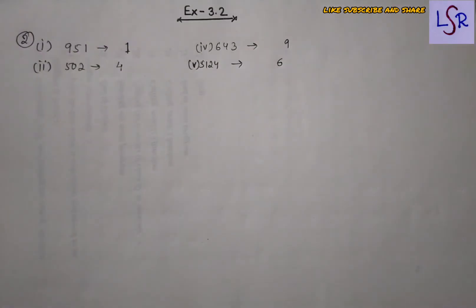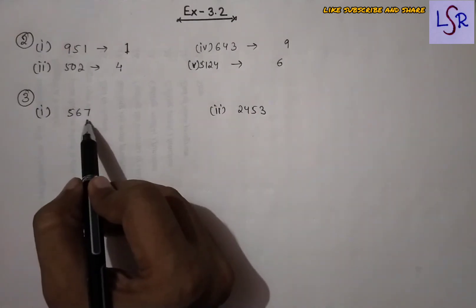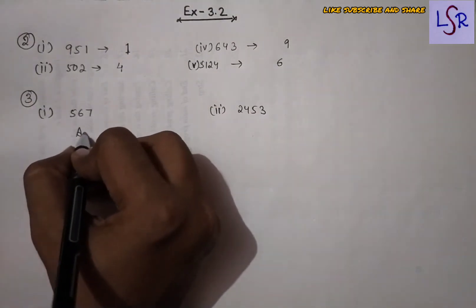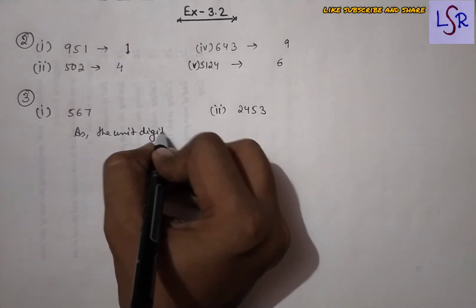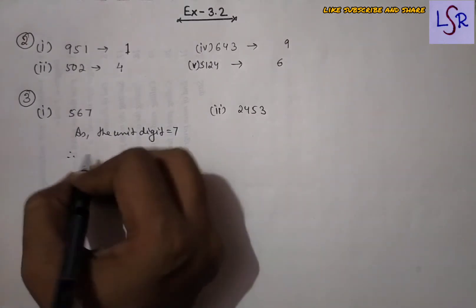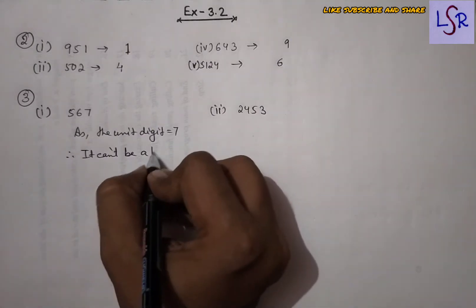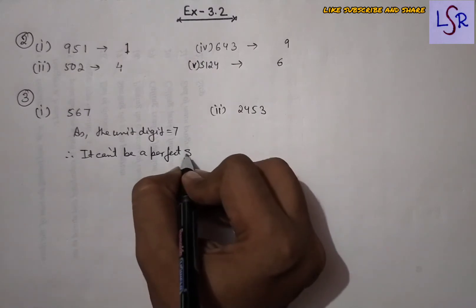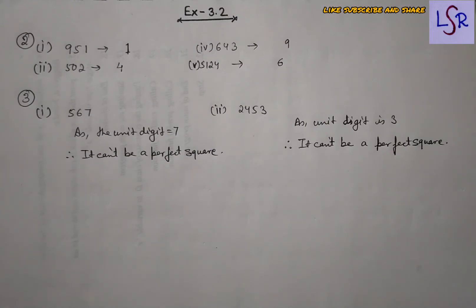Now Question 3: give the reason why the given number is not a perfect square. For the first case, the unit digit is 7, therefore it can't be a perfect square. Similarly, for the second case, the unit digit is 3, so it also can't be a perfect square.